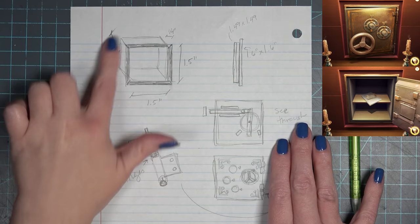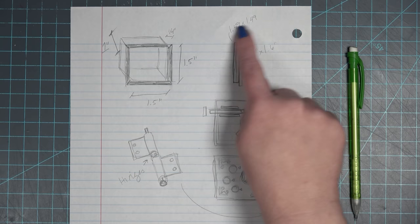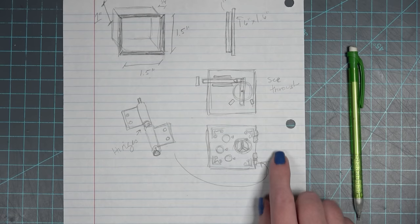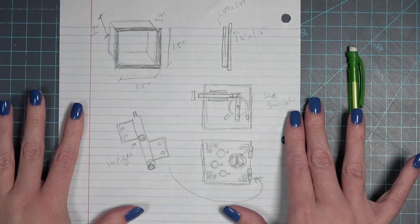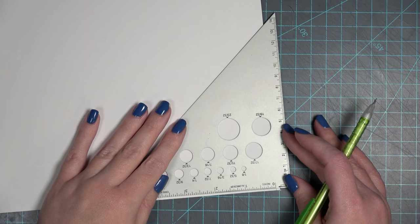To begin I'm sketching out my ideas while referencing the original safe from the game. It's not going to be exactly the same. I am adding one more dial. The inside is definitely going to look a little bit different because in the game it's covered up but you will be able to see the mechanism when the door is open. The hinges might be a little bit different. Definitely there's not going to be as much decoration on the face but it's enough for me to get started on this project.